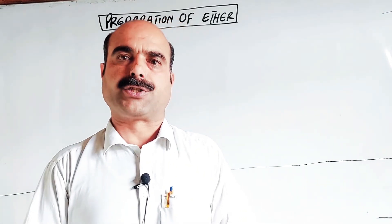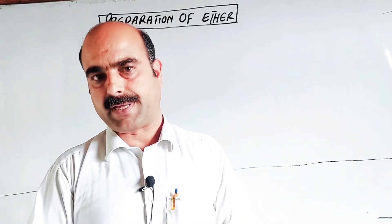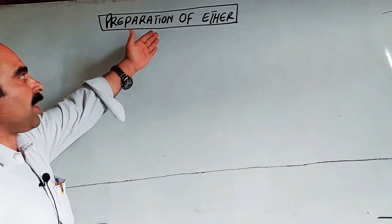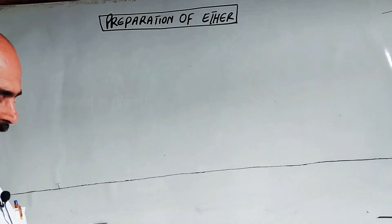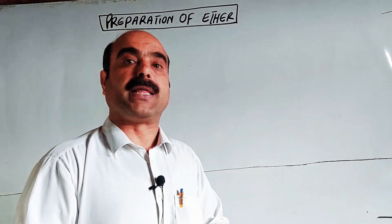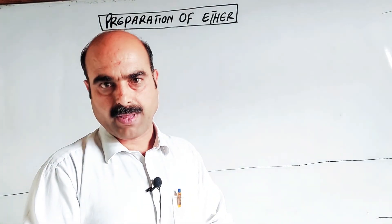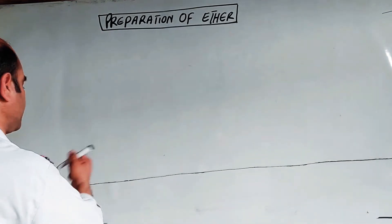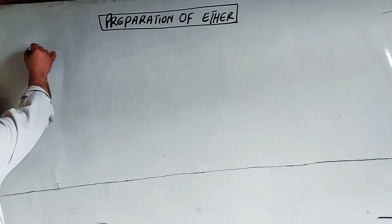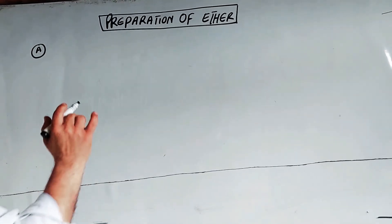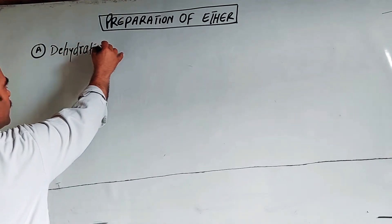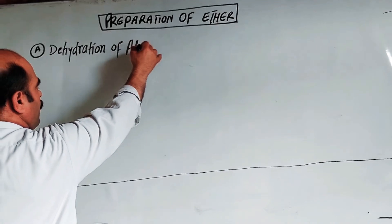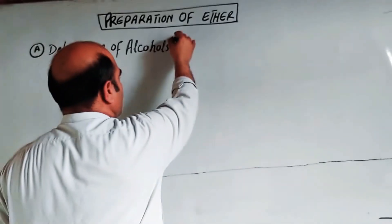The first topic is preparation of eaters, and the next important topic is chemical reactions of ether and the reactivity of ether. For the preparation of eaters, there are two methods. The name reaction that comes is Williamson synthesis. The first method is dehydration of alcohols - the intermolecular dehydration of alcohols.